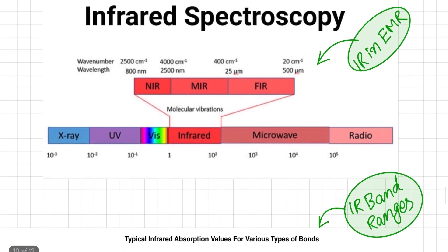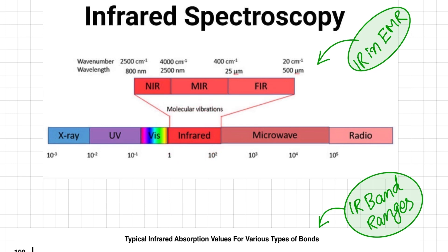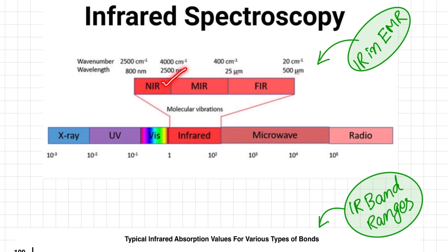If we see here in the electromagnetic spectrum, the infrared region lies between the visible region and the microwave region. This infrared region is further divided into three regions: near infrared, mid infrared, and far infrared.